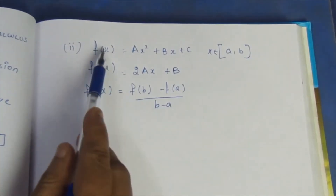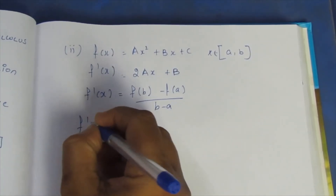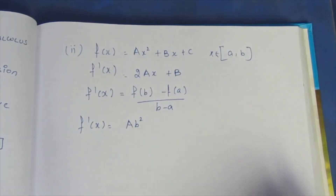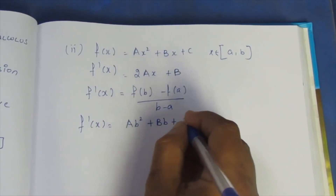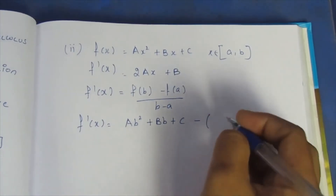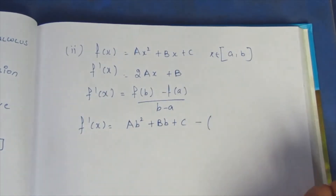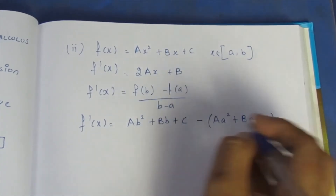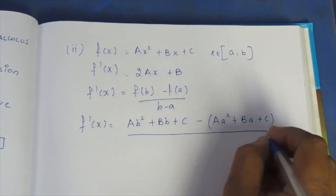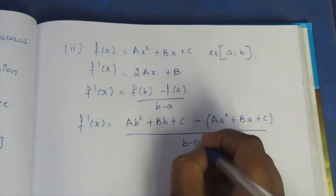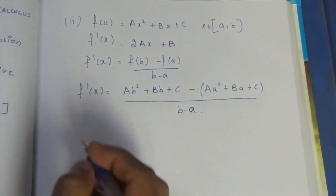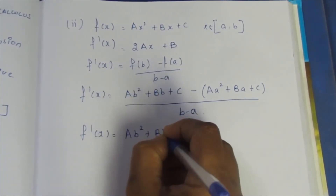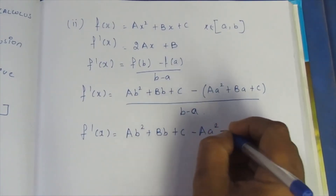Substituting x = b into f(x): f(b) = ab² + bB + c. Substituting x = a: f(a) = a·a² + b·a + c = a³ + ba + c. So [f(b) - f(a)] / (b - a) = [ab² + bB + c - a·a² - b·a - c] / (b - a).